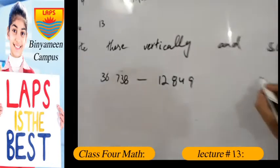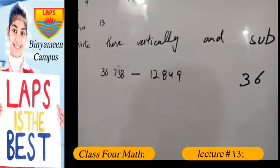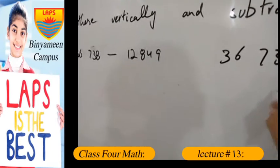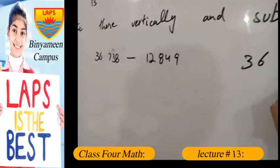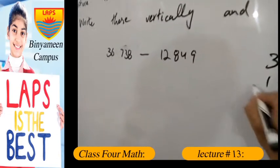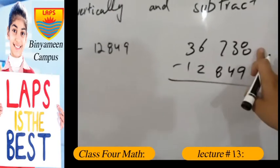Vertically, they'll be written as 36,738 and the other value is 12,849. So I have to subtract both these values here, and for that you